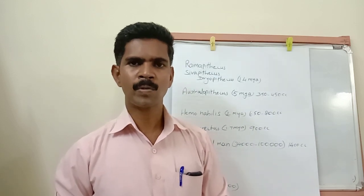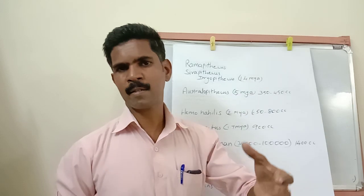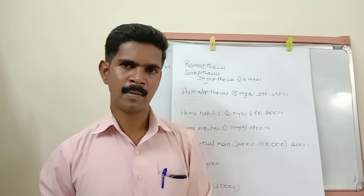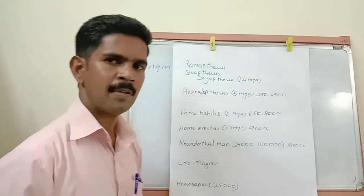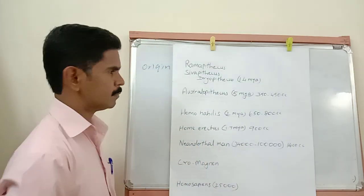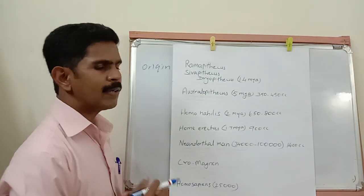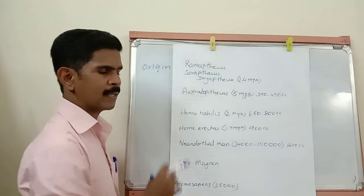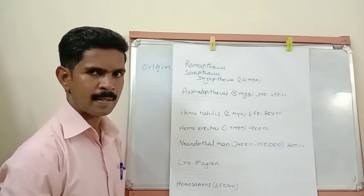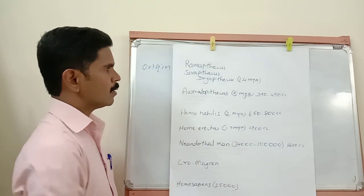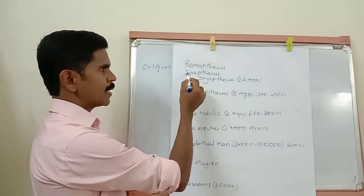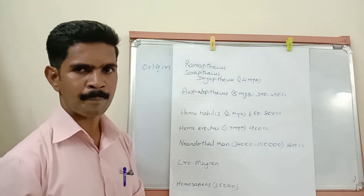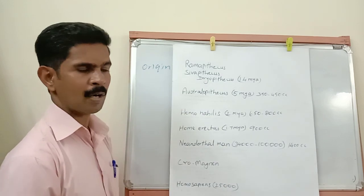Now we are going to study about the evolutionary steps of human beings — how human beings evolved from their ancestors. Our first ancestors are called Ramapithecus and Sivapithecus, and both of them derived or evolved from another ancestral form called Dryapithecus.